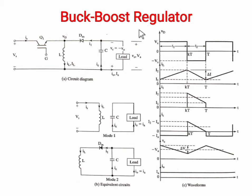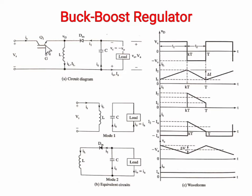The circuit arrangement of a buck-boost regulator is shown in the figure. The circuit operation is divided into two modes. During mode one, the transistor is on and the diode DM is in reverse biasing, so the input current rises linearly and flows through the switch and the inductor. During mode two, the transistor is switched off and current flows linearly through the inductor with DM in forward bias conditions.